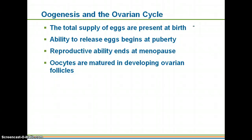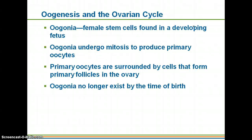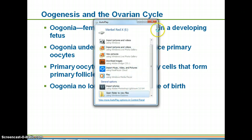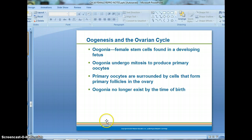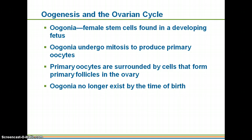Oocytes are your egg cells, and these are matured within developing ovarian follicles. Just like in males we have the spermatogonia — which are the male stem cells — for females we have the oogonia. They will be found in the developing fetus and will undergo mitosis to produce primary oocytes. The primary oocytes are basically the immature egg cells that you are born with as a female. They are surrounded by cells that form primary follicles in the ovary — your ovaries are full of these immature egg cells, and every month one of them will mature within a follicle and then be released.